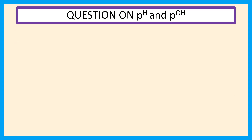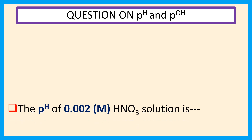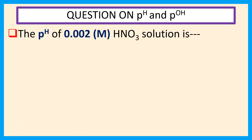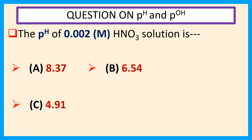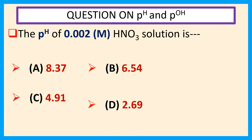Welcome, everyone. Question on pH and POH. The pH of a 0.002 molar HNO3 solution is — choices are: a) 8.37, b) 6.54, c) 4.91, d) 2.69.